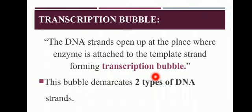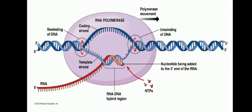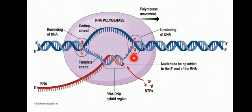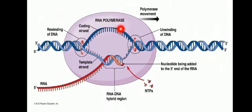After that, a transcription bubble is formed. The DNA is double-stranded, and its two strands begin to unwind. When RNA polymerase attaches to the promoter site on the DNA, that region of the DNA strand opens up. As the two DNA strands open, they form a bubble-like structure which we call the transcription bubble. This bubble creates two strands: one is the template strand and the other is the coding strand. As you can see in the diagram, the bubble-like structure is formed as the strands open.